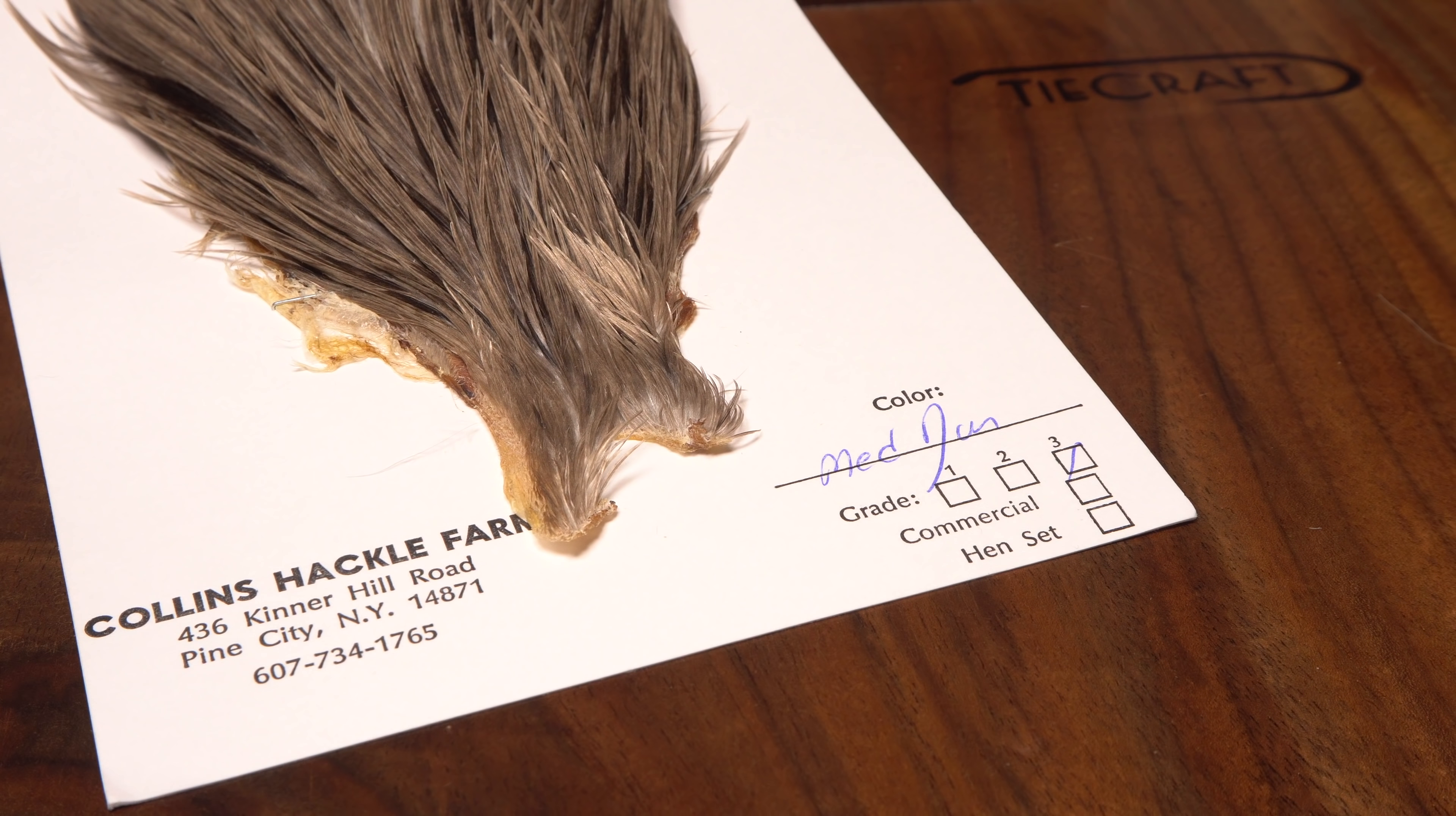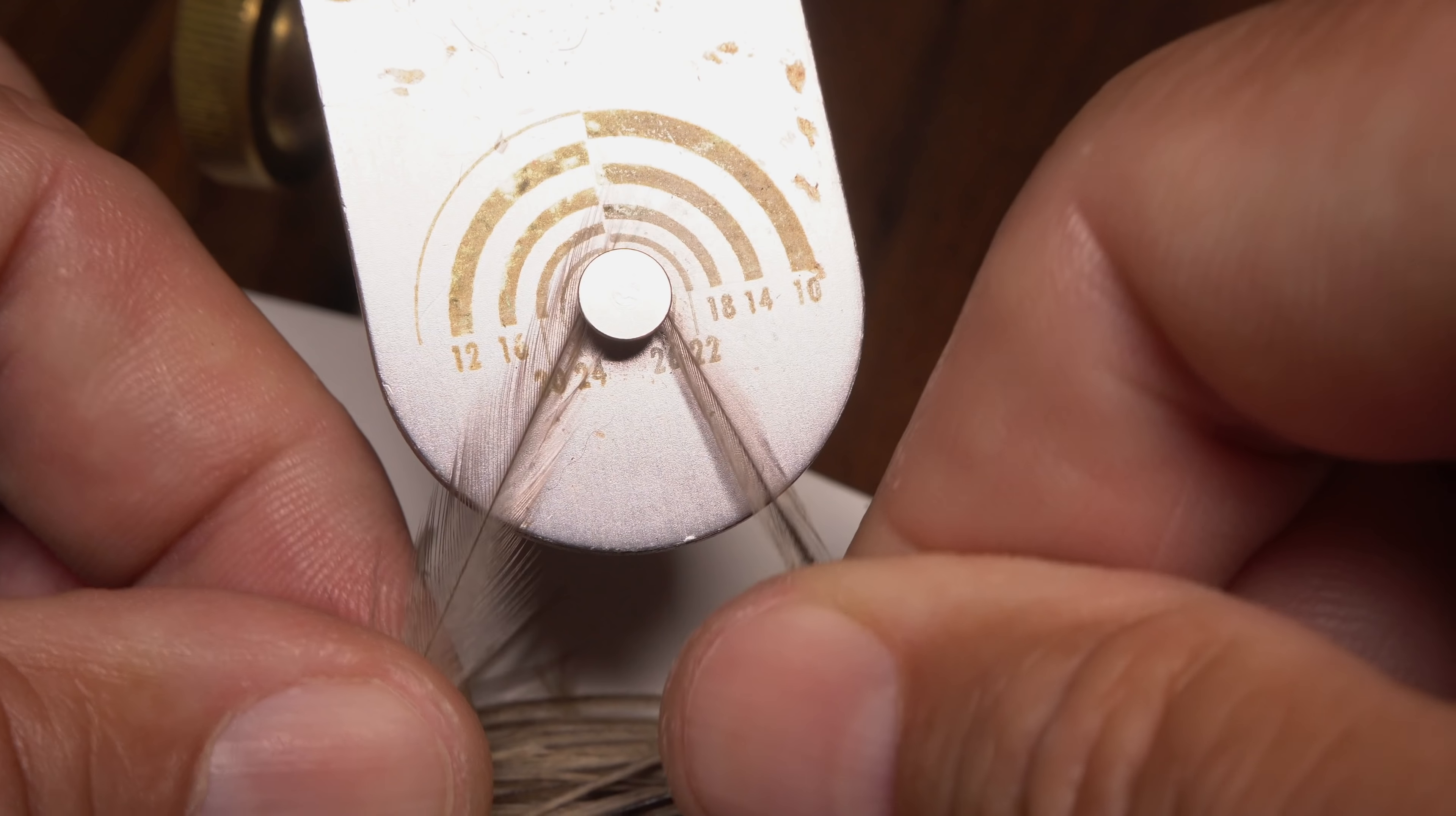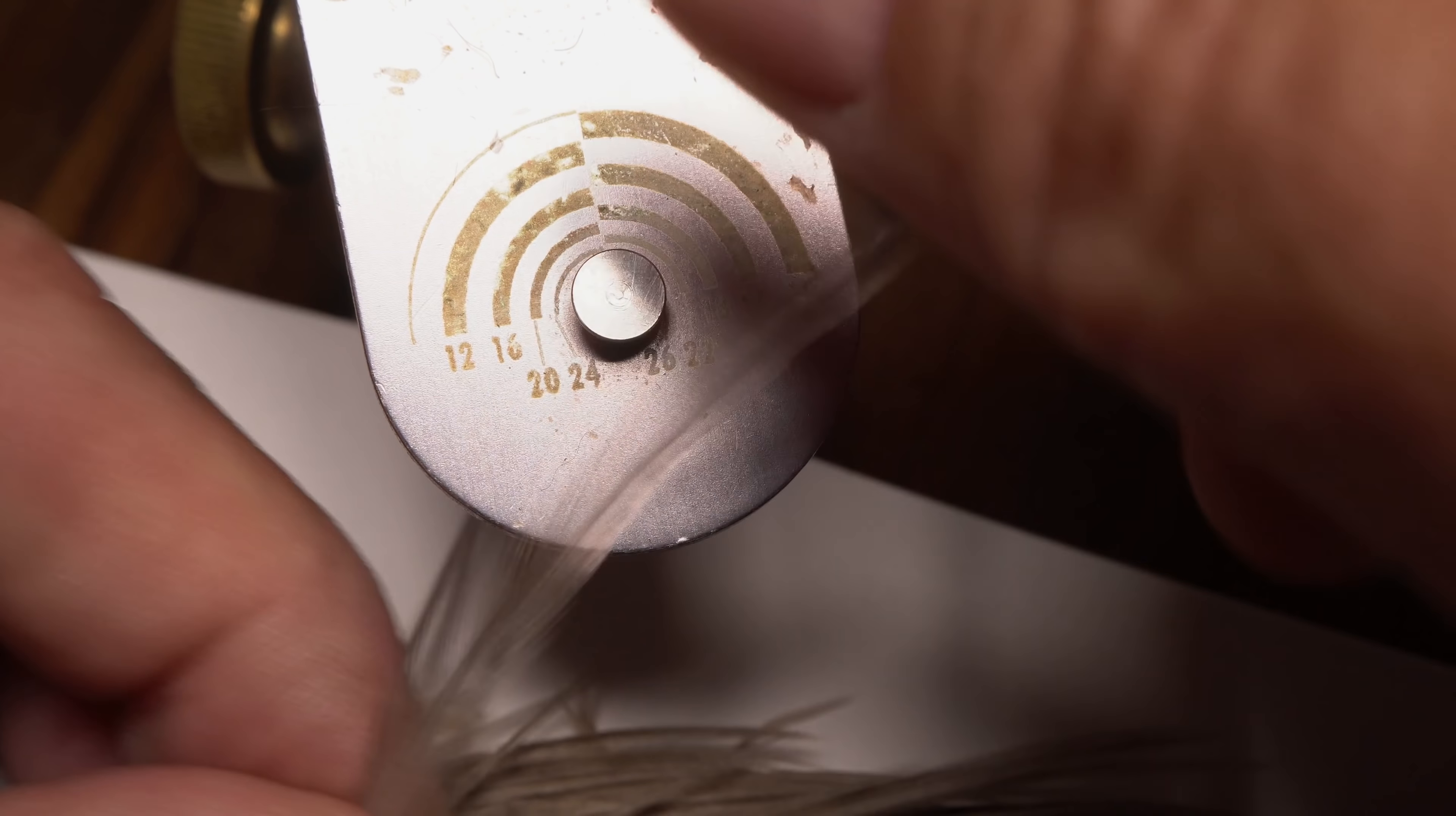A single feather from a medium dun neck is used to hackle the fly. Make sure the fibers are the correct length, here size 12, before plucking the feather free from the skin.